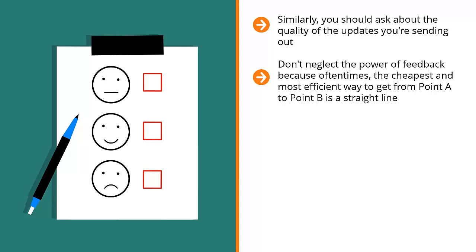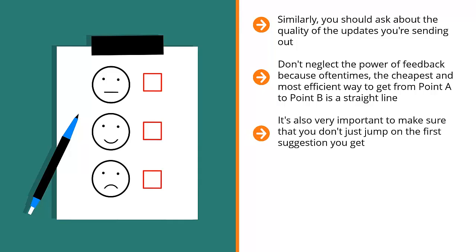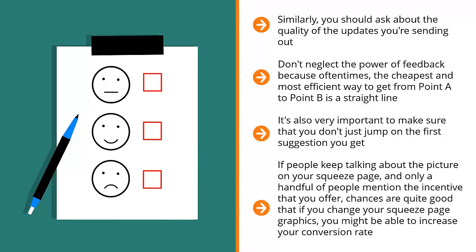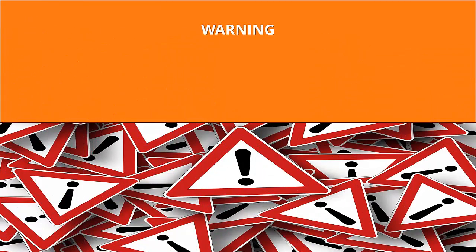Don't neglect the power of feedback, because oftentimes the cheapest and most efficient way to get from point A to point B is a straight line. Ask your list members, but offer an incentive. It's also very important to make sure that you don't just jump on the first suggestion you get. Look at the total amount of responses and pay attention to the most common theme. If people keep talking about the picture on your squeeze page and only a handful mention the incentive you offer, chances are good that changing your squeeze page graphics might increase your conversion rate. Look for these patterns and don't get thrown off track by outlier responses.